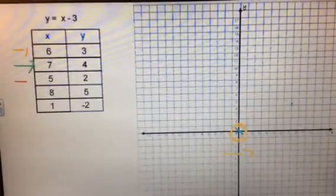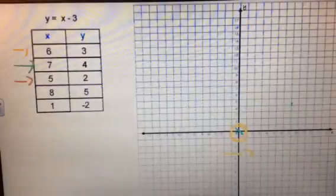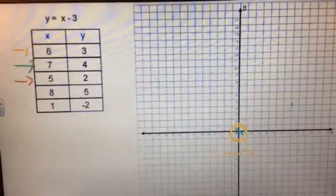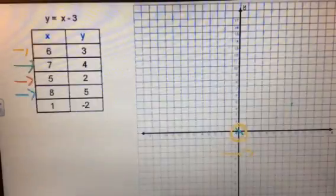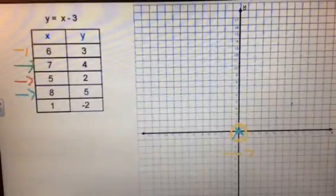My next point will be 5, 2. So to the right 5 spots and then up 2. My next coordinate point will be 8, 5. So again, at my origin is where I start looking, to the right 8 and then up 5.